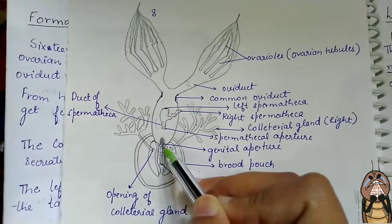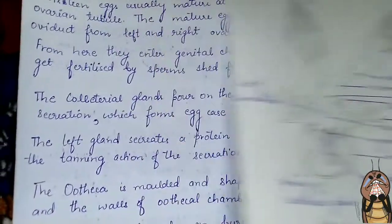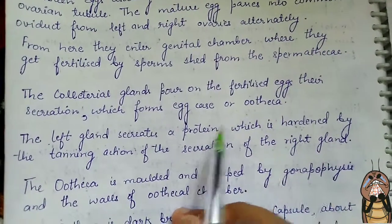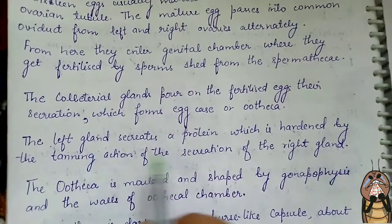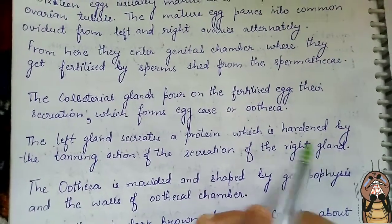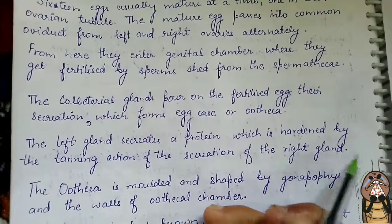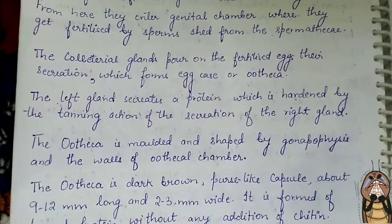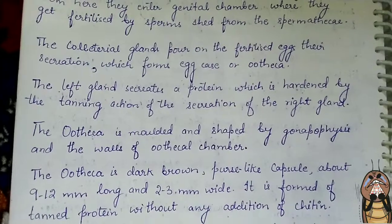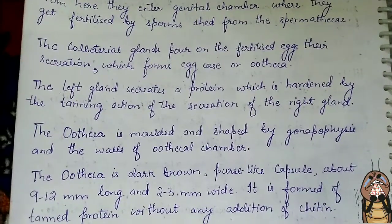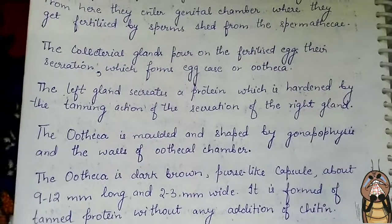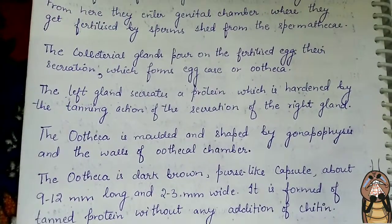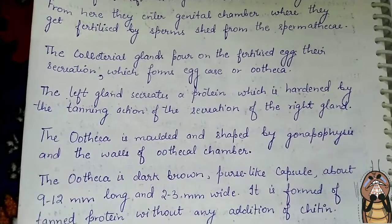The collateral glands help in the formation of the ootheca. The left collateral gland secretes a protein, and the tanning and hardening action is carried out by the secretion of the right collateral gland. The ootheca is then molded and shaped by the gonapophyses and the walls of the ootheca chamber.